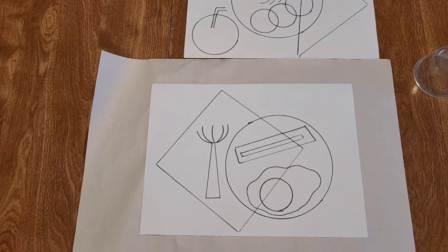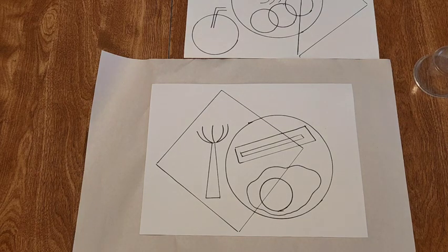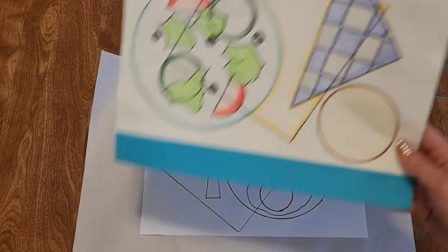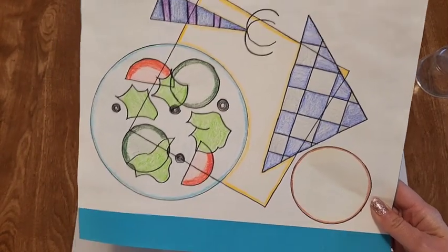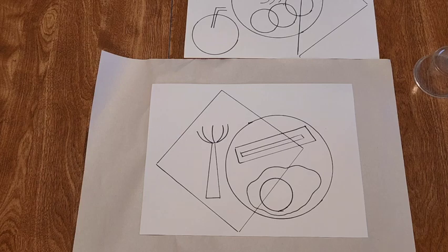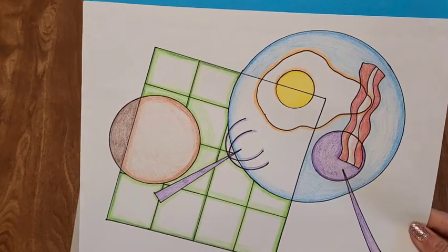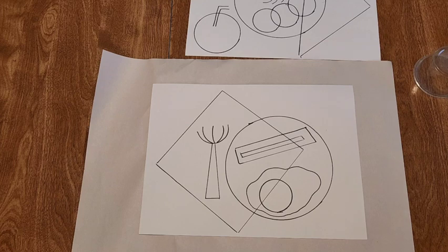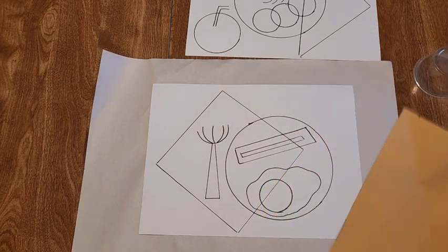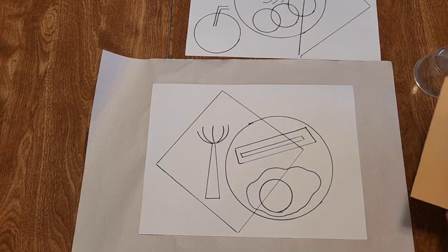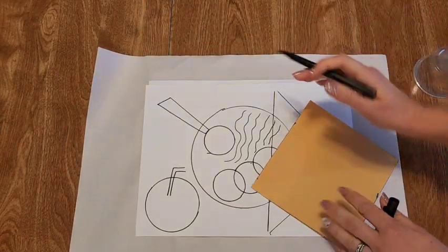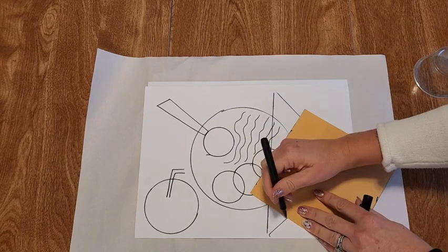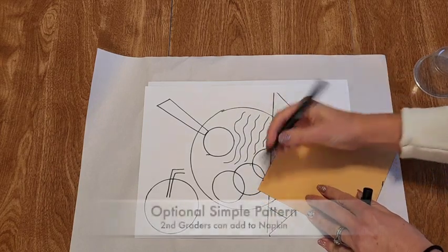Awesome. And lastly for you older kids, if you want to add a pattern to your napkin, like you second graders, you can. You don't have to. But if you wanted to add a pattern to your napkin, we would still use our straight edge because we're always going to be precise. And let's do it to this napkin here. You could just use your template and make some lines. So this is optional for our older kids.